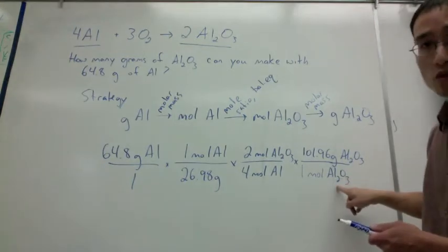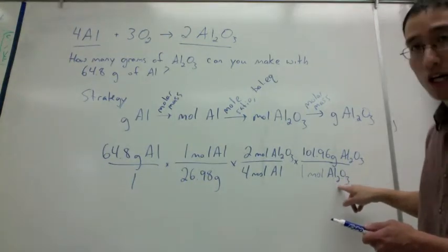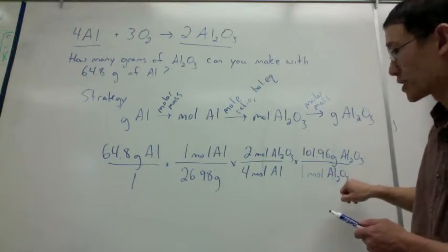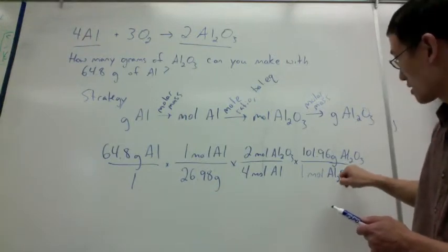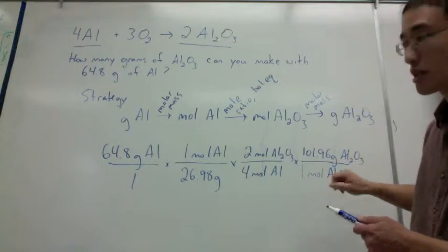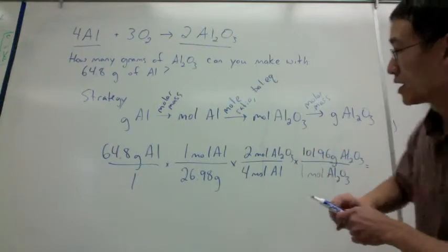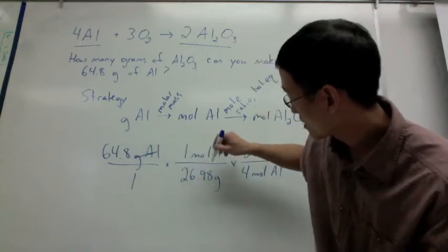Once again, this just comes straight from the periodic table, two times the molar mass of aluminum, and three times the molar mass of oxygen, 16, and this is 26.98. Add all that up, and now I can put an equal sign so that you can see grams of aluminum can cancel, moles of aluminum can cancel, moles of aluminum oxide can cancel, and now your final step is grams of aluminum oxide.